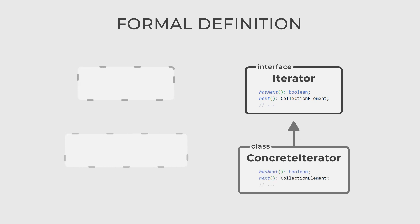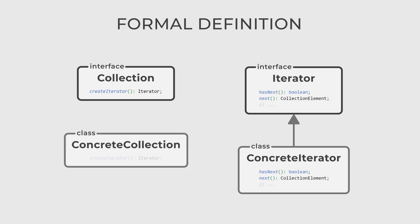ConcreteIterator is a class that implements the iterator interface and provides the actual traversal logic for a specific collection. Then, we have the collection, an interface that defines methods for creating an iterator. And lastly, ConcreteCollection is a class that implements the collection interface, providing the actual collection of elements and creating an appropriate iterator.